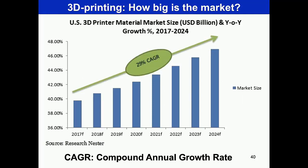To finish this part with market context: looking at the 3D printer material market size from 2017 to 2024, a compound annual growth rate (CAGR) of about 29% is seen in this sector. This reflects the growing number of materials being used, which in turn reflects rapidly growing 3D printing applications.